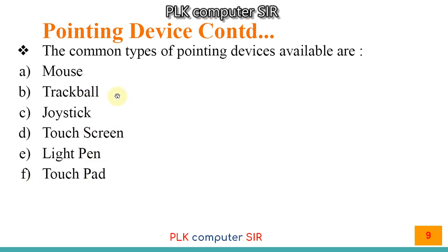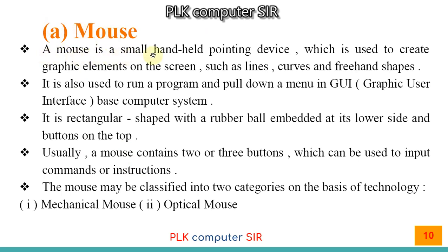Number A: Mouse. A mouse is a small handheld pointing device used to create graphic elements on the screen such as lines, curves, and freehand shapes in applications like MS Paint. It is also used to run programs and pull down menus in a GUI — Graphical User Interface — based computer system like Windows 10, such as clicking on icons or using the File menu in Microsoft Word.